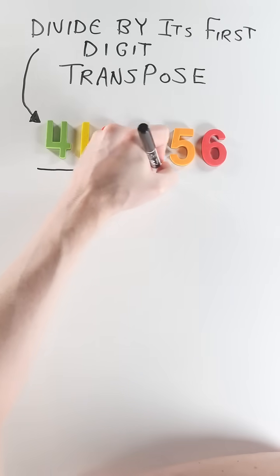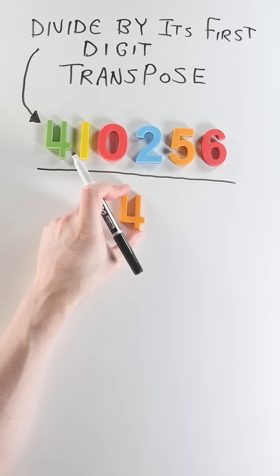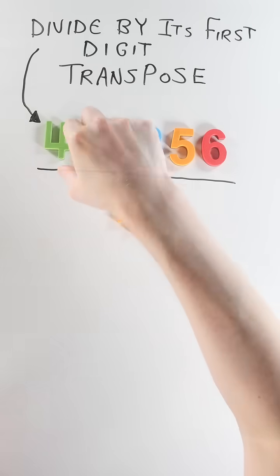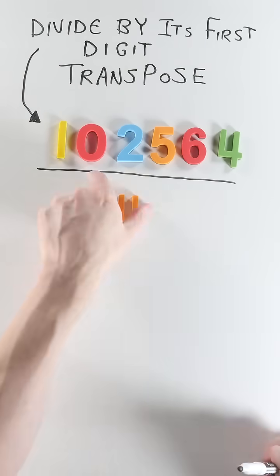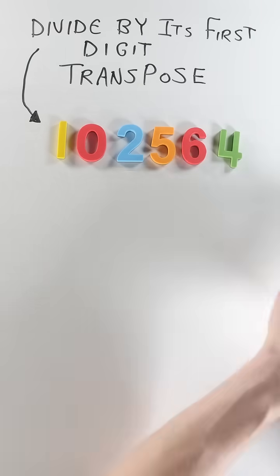So like 410,256 divided by its first digit 4 goes like this. Move that 4 to the end and shift everything over one place to get 102,564.